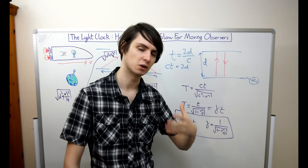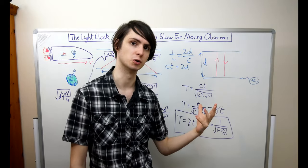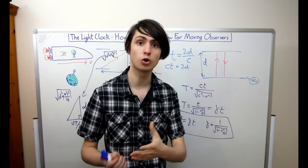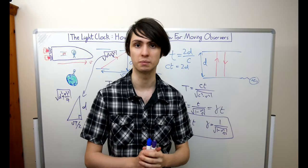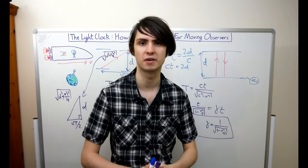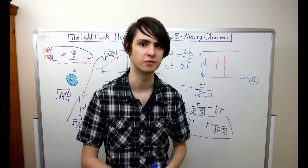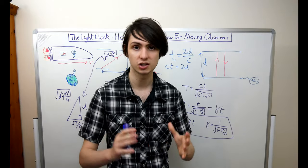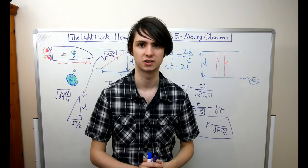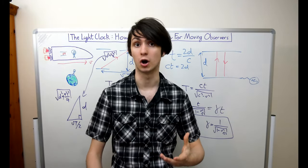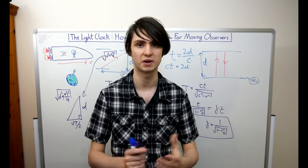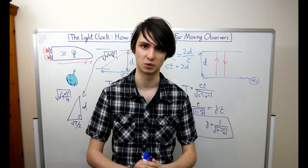If you look back at how we arrived at this conclusion you'll notice that the only non-obvious assumption we made was that the speed of light in a vacuum is a constant for all observers. This is what's called the light postulate and it's one of only two postulates that special relativity is built from.